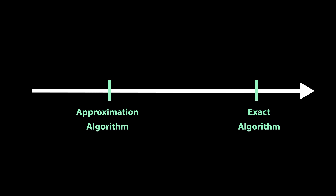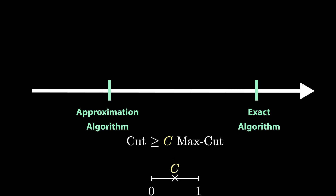So we will not be solving this problem exactly today, but we can try to find approximate solutions. By that, I mean find a cut whose value is at least a half, or three quarters, or more generally some constant c of the value of the maximum cut. This constant c is called the approximation ratio. The closer it is to one, the better the approximation algorithm is.